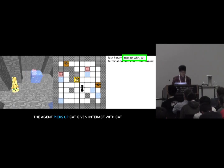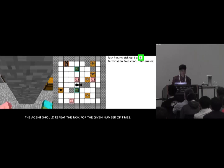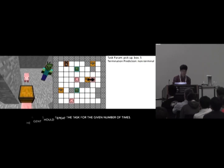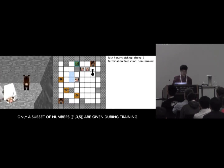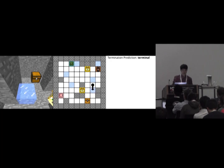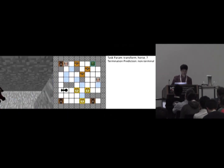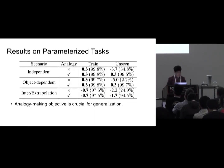In the final video, we added one more parameter: a number. The agent has to repeat the same task for a given number of times and predict when it is finished. During training, we gave only a subset of numbers like 1, 3, and 5, and during evaluation, we gave unseen numbers like 2, 4, 6, and 7. We found that the agent can successfully generalize over unseen numbers by repeating the task the correct number of times, even though it has never seen these numbers during training. We defined analogies based on arithmetic — for example, 1 to 3 is the same as 2 to 4. This table summarizes the results: we evaluated on three different generalization scenarios and found that the analogy-making objective is crucial for generalization to unseen test parameters.